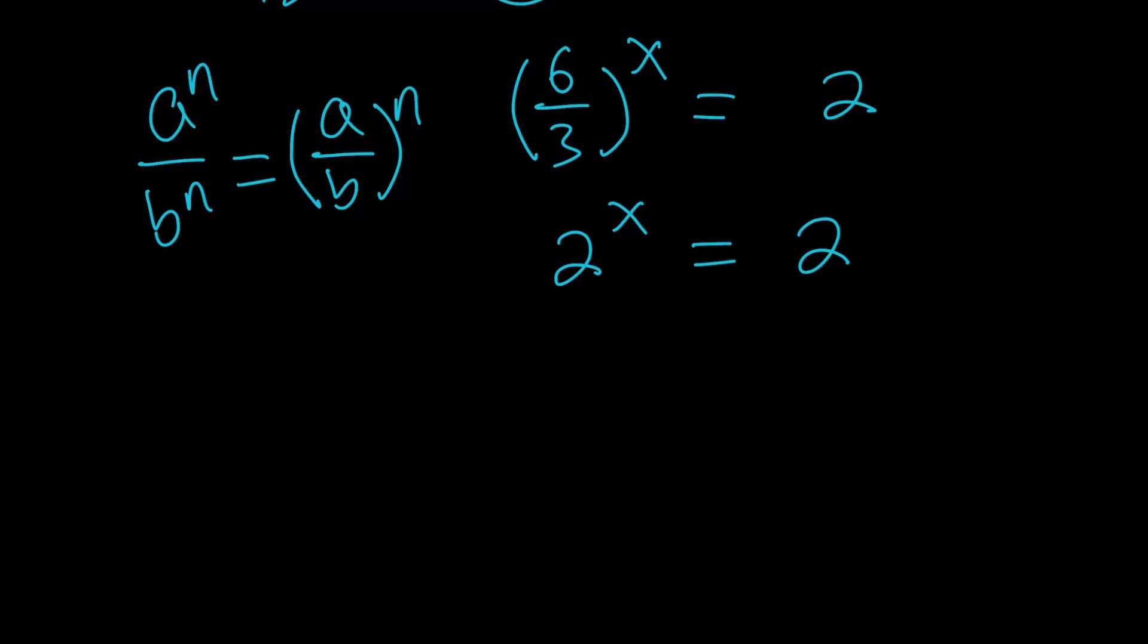Because we're going to look at all the solutions. Now, from here, the real solution that I'm getting is x equals 1 because this is 2 to the first power. If the bases are equal and they're not 1, negative 1, or 0, x equals 1 is going to work, right?